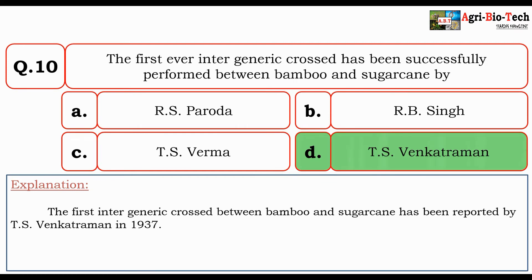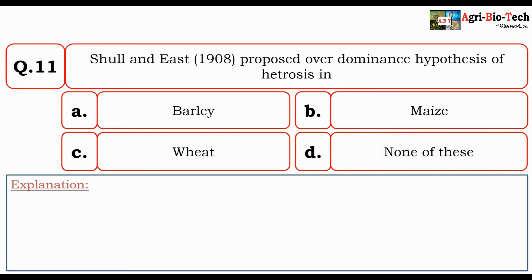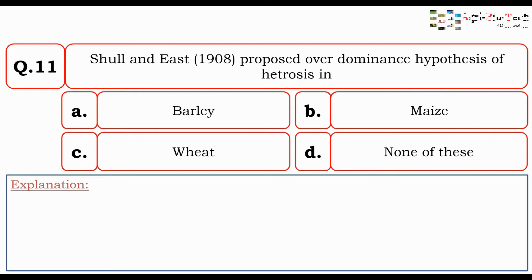Next question: Shull and East in 1908 proposed the overdominance hypothesis of heterosis, and the crop involved was — barley, maize, wheat, or none of these? The correct option is maize.